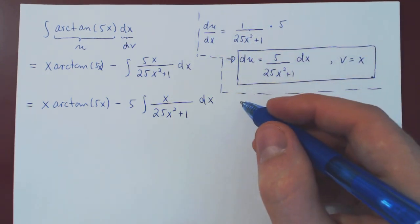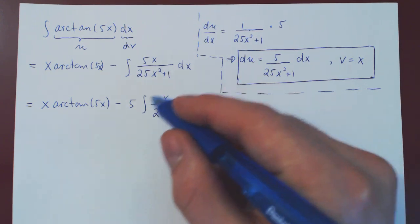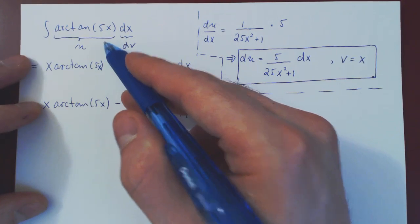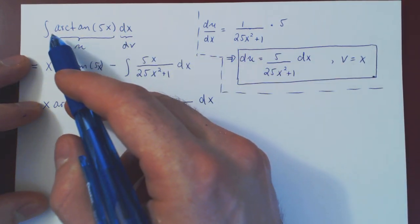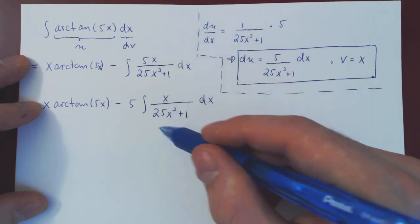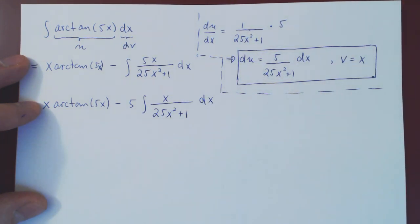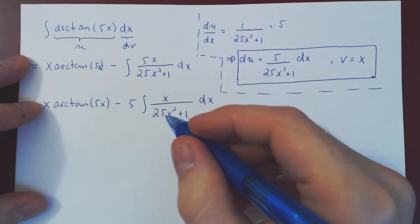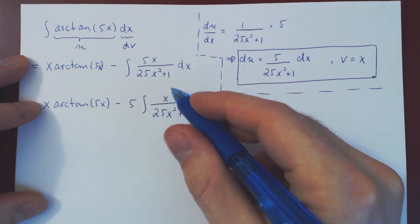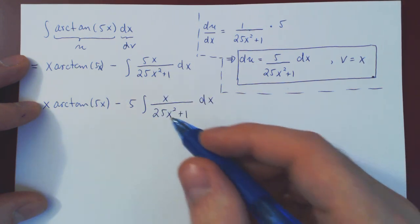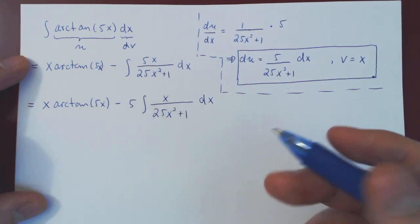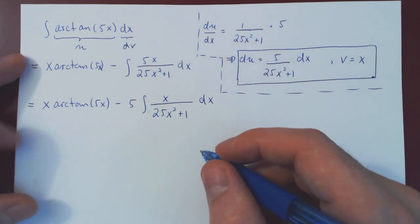Now what? Well, as always, we ask, is the new integral we obtain by applying integration by parts easier than the original one? Well, clearly the answer is yes, because we've went from an inverse trigonometric function to a simple rational function. The question is now, how do we integrate this rational function? Well, if you notice, the denominator is a quadratic, the numerator is a linear polynomial. So up to a constant multiple, the derivative of our denominator is our numerator. This is the perfect setup for a u substitution.